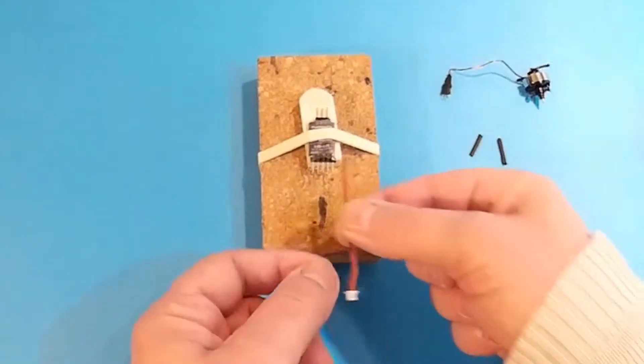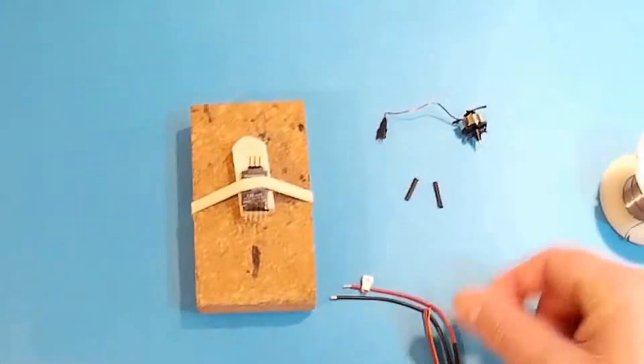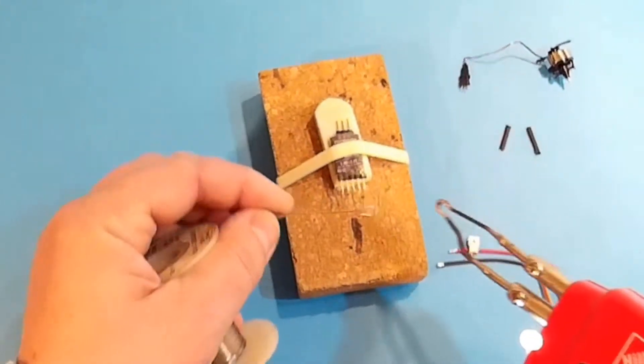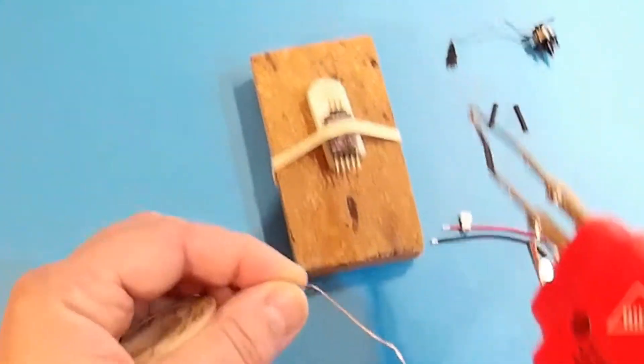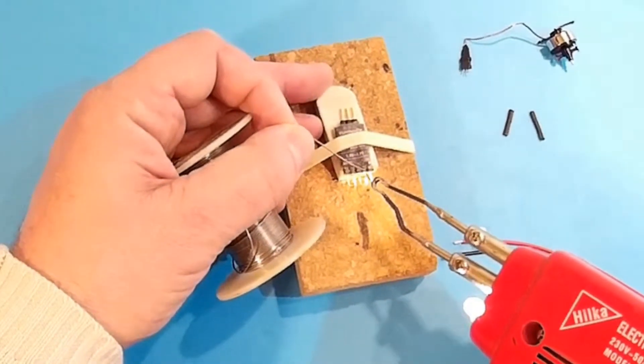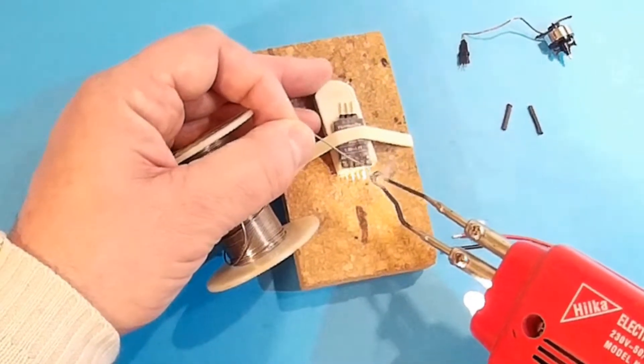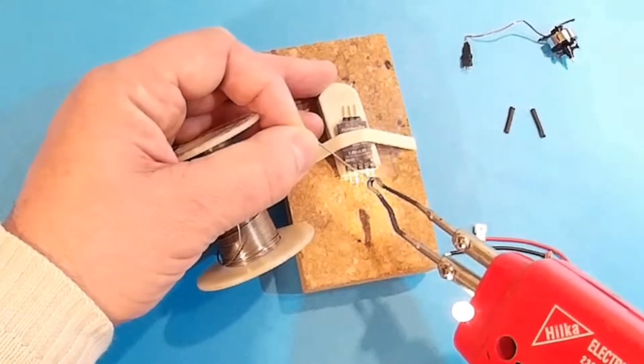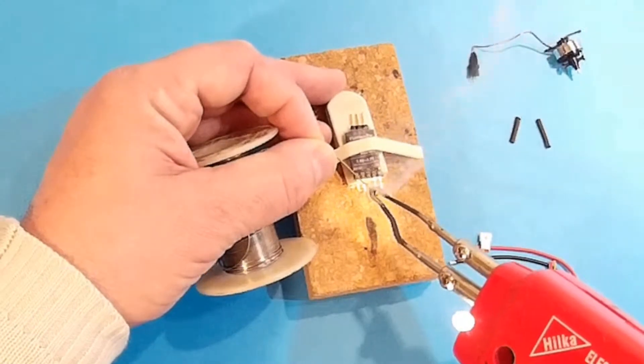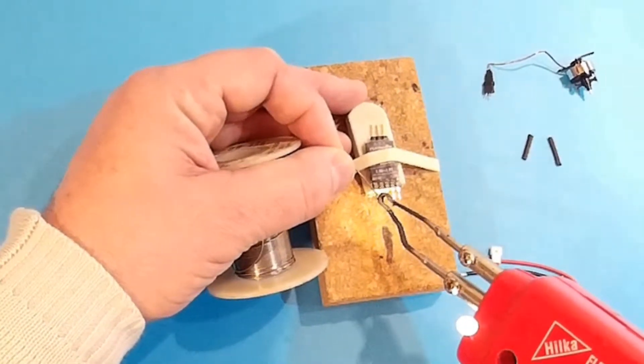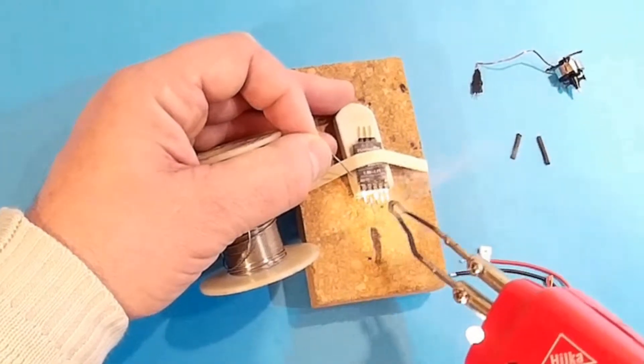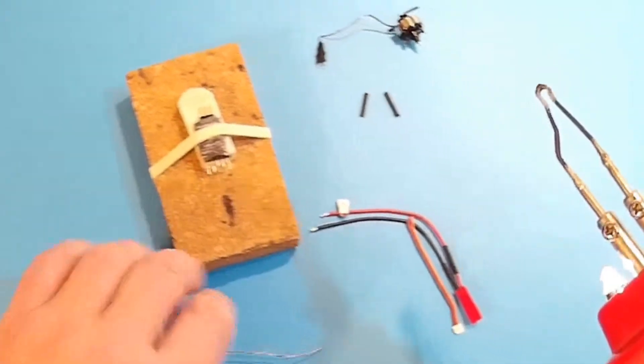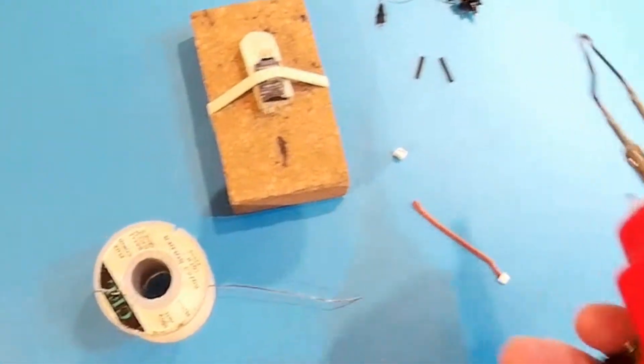Okay, I'm going to solder it straight onto there. First I need to tin these ends. So, solder iron. Tin. Okay, that's what I need to tin these ends.